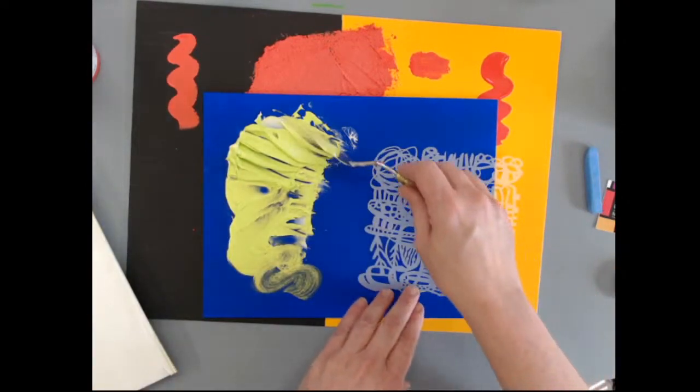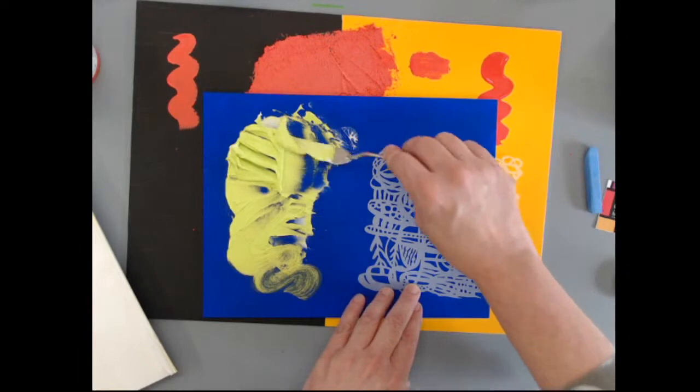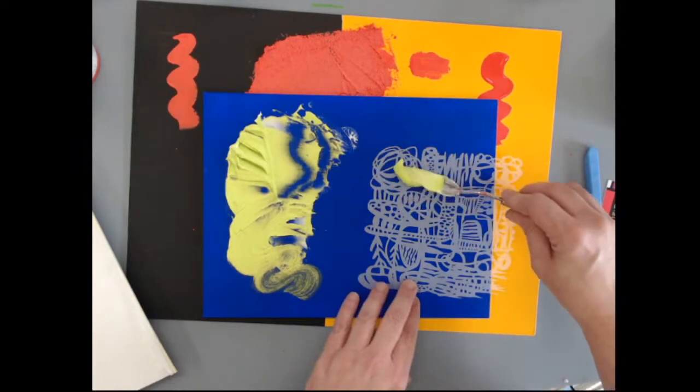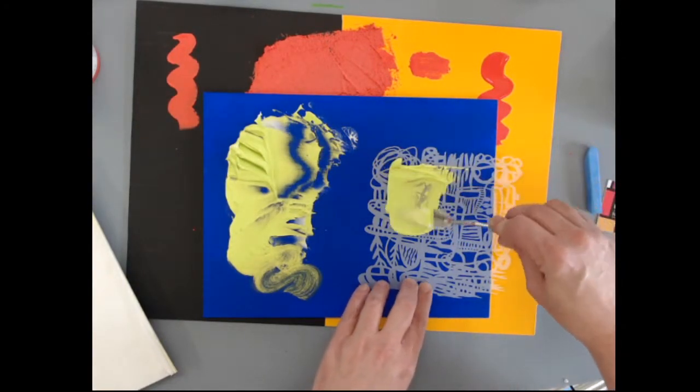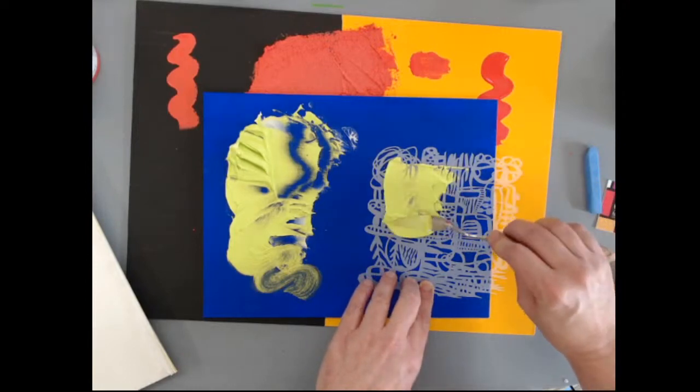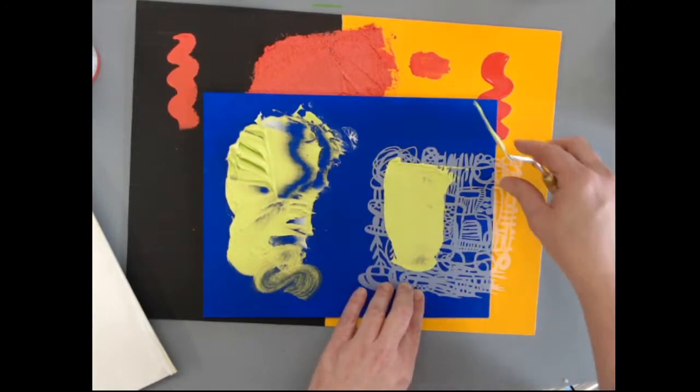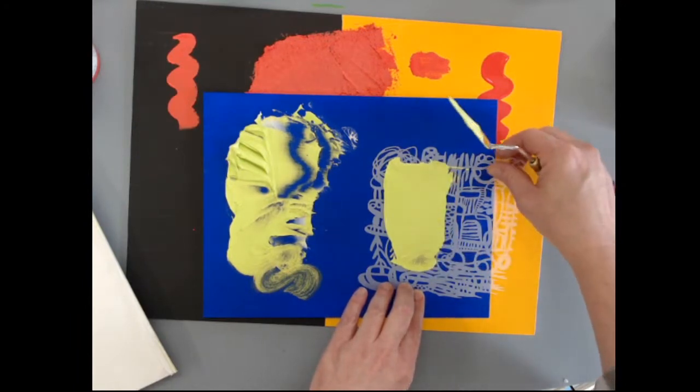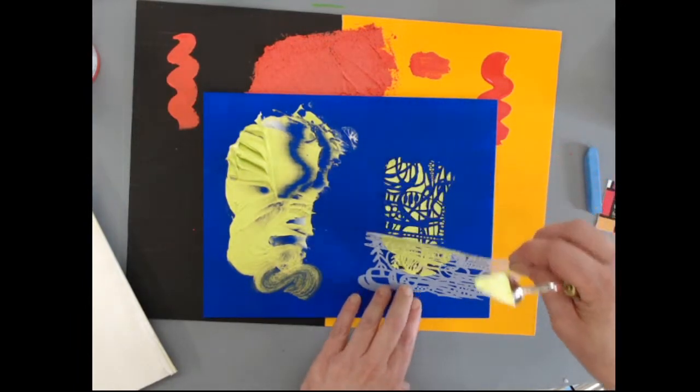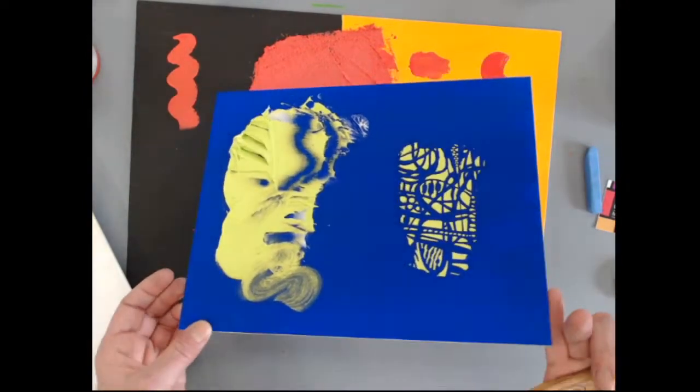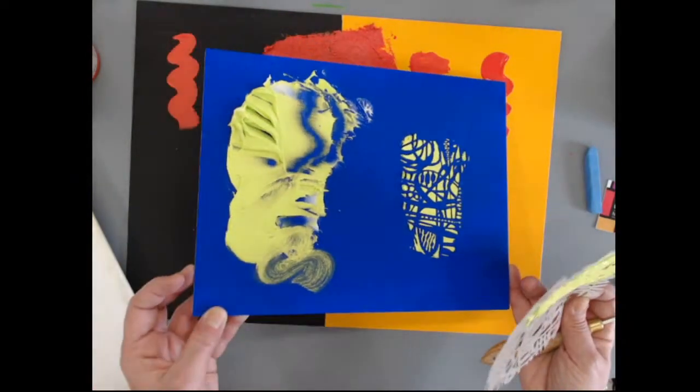You can do some sculptural kinds of applications with this too. Like shoving it through this stencil. A more dimensional application. So I'm just going to press it through just a section here. And then I'm going to really cake it on. And now I'm going to lift that stencil up. And you can see that I'm able to create some dimensional patterns that way as well. It's a really lovely way to work.